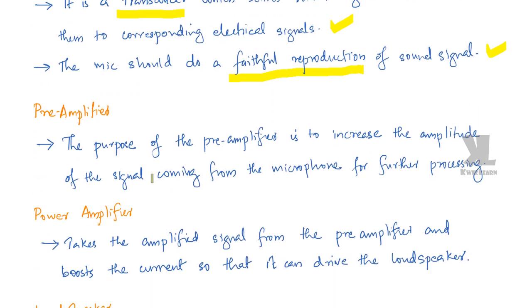Coming to the next block — the pre-amplifier. The purpose of the pre-amplifier is to increase the amplitude of the sound signal coming from the microphone for further processing.